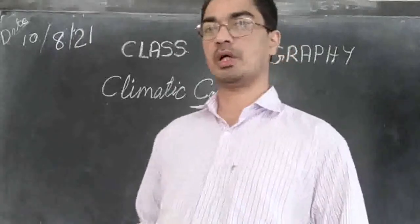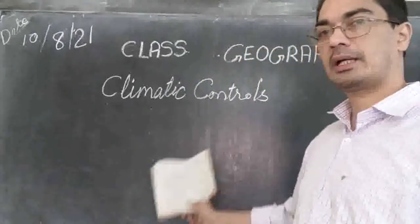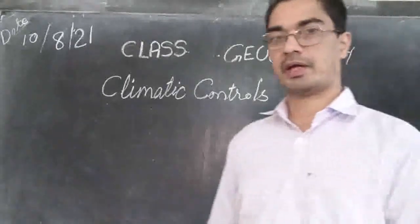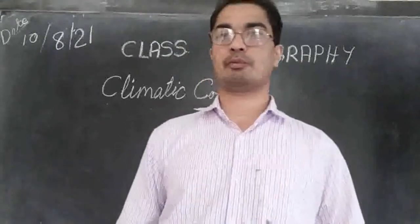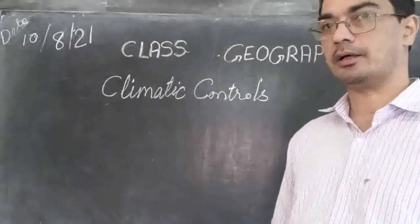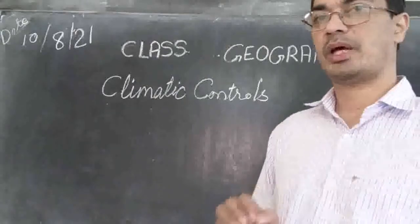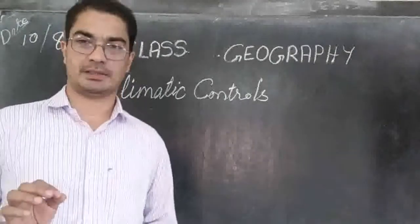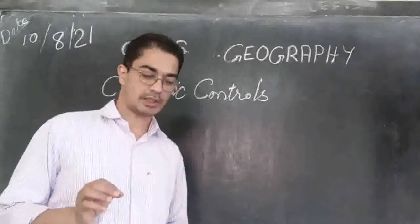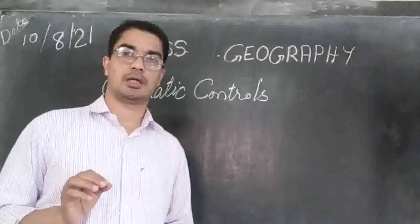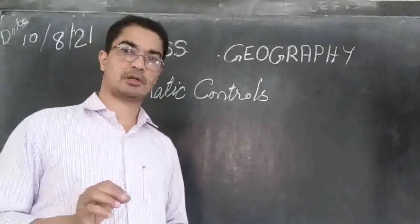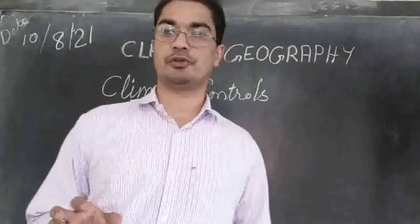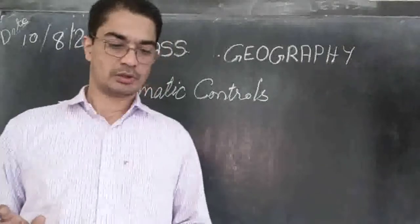Today let us look at the topic of climatic controls — the factors that control the climate of a place. There are six climatic controls that determine the climate of an area, and we shall see what those six elements are.